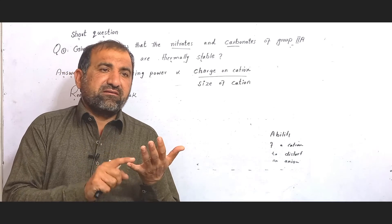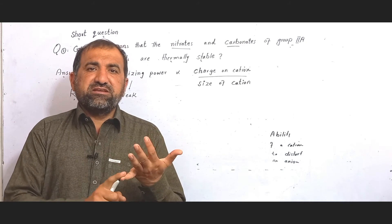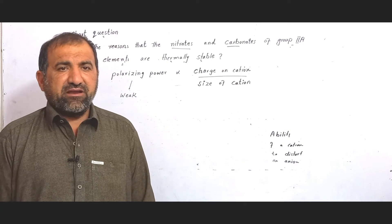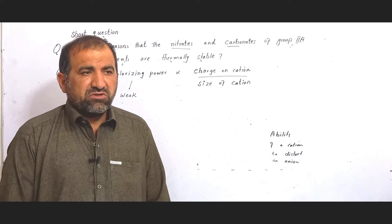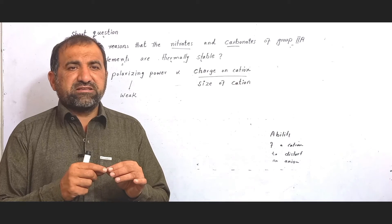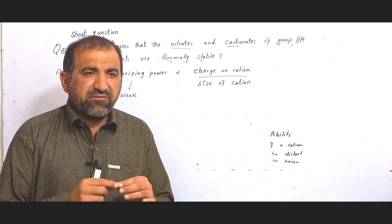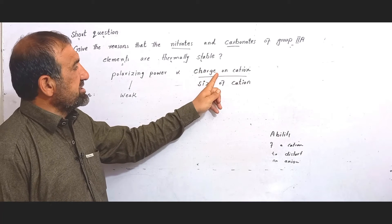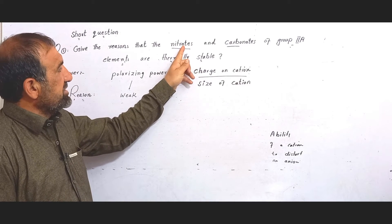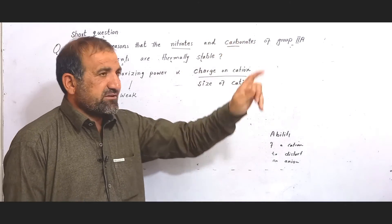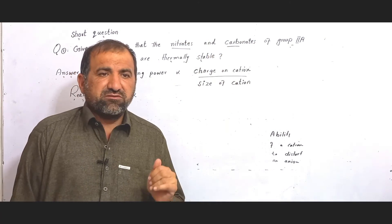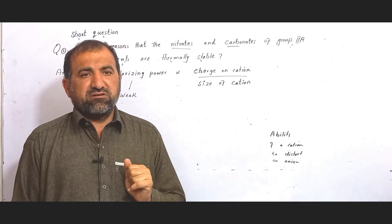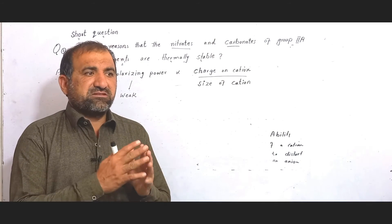Due to having a low charge density and a large size, the second A group element has weak polarizing power. Due to having weak polarizing power, the cations have less tendency to distort and facilitate the decomposition of nitrate and carbonate. As we go down the group, the thermal stability increases.